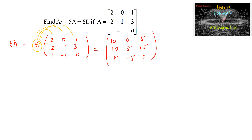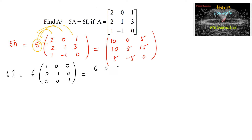Next, 6 times I. Since A is a 3×3 matrix, we consider I also as a 3×3 identity matrix [1,0,0; 0,1,0; 0,0,1]. Multiplying by 6, we get 6I = [6,0,0; 0,6,0; 0,0,6].